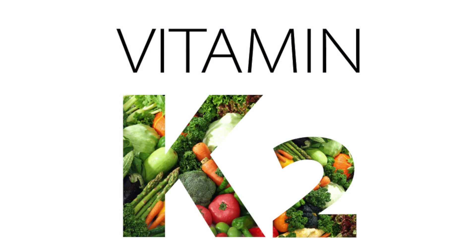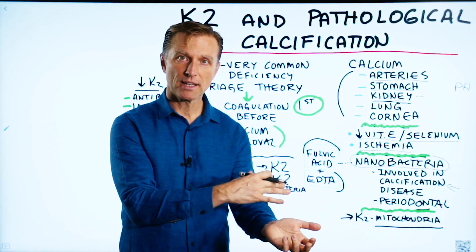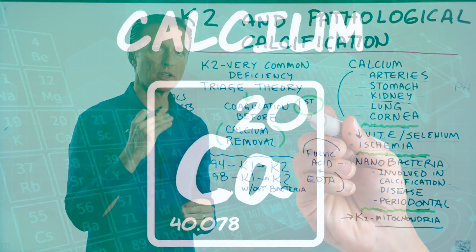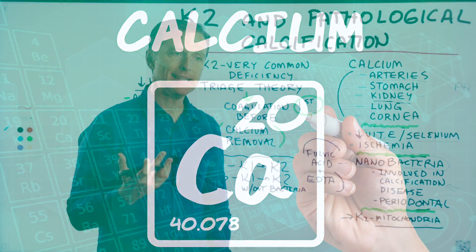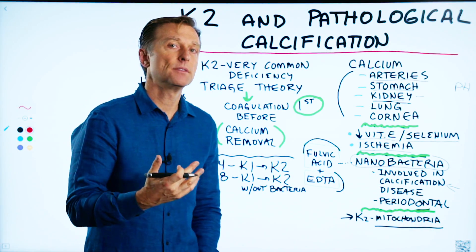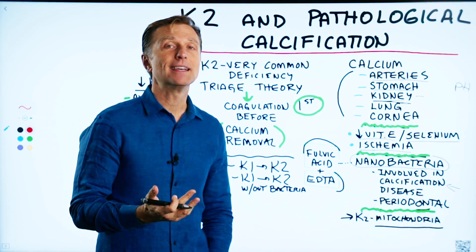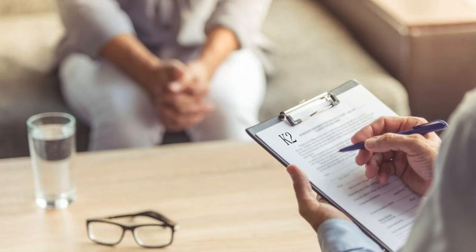So vitamin K1 is about stopping some type of bleeding in the body, while vitamin K2 is the transportation of calcium. Is vitamin K2 a common deficiency? The answer is yes, absolutely — many people are deficient in vitamin K2.